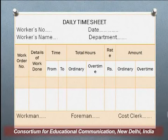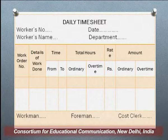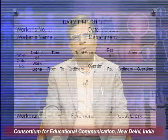The broad performa of daily timesheet includes: worker's name, number, date, department, work order number, details of the work done, time from and to, total hours, ordinary hours, overtime, rate per hour, amount for ordinary time, and amount for overtime wages. These are countersigned by the foreman, cost clerk, and workman. The performa may change depending on the organization's requirements, but these are the broad issues recorded in the daily timesheet.